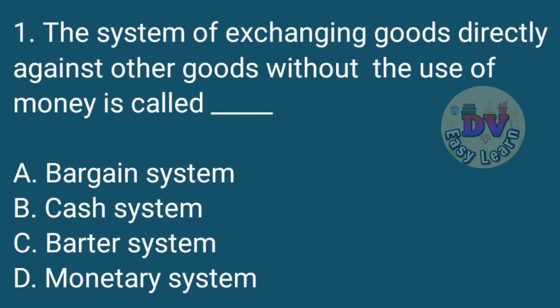Question No. 1: The system of exchanging goods directly against other goods without the use of money is called?